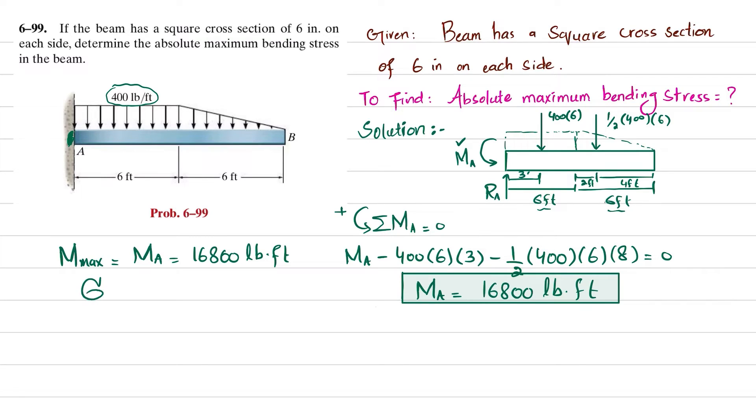We know that maximum bending stress equals maximum bending moment times c divided by I. We have the maximum bending moment; now we need I. The beam has a square cross section with each side 6 inches. If we draw its neutral axis, it will be at 6 by 2, which is 3 inches, because it's symmetrical.